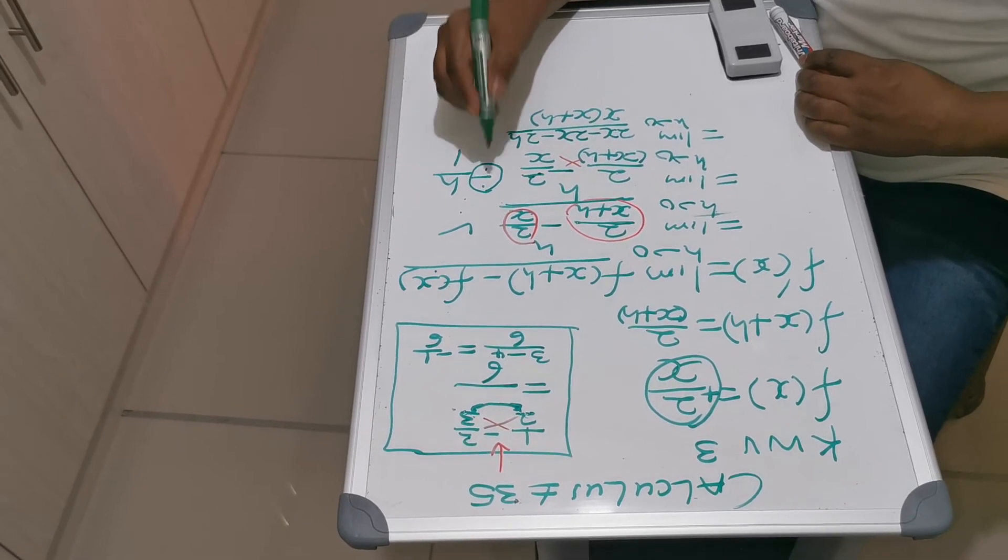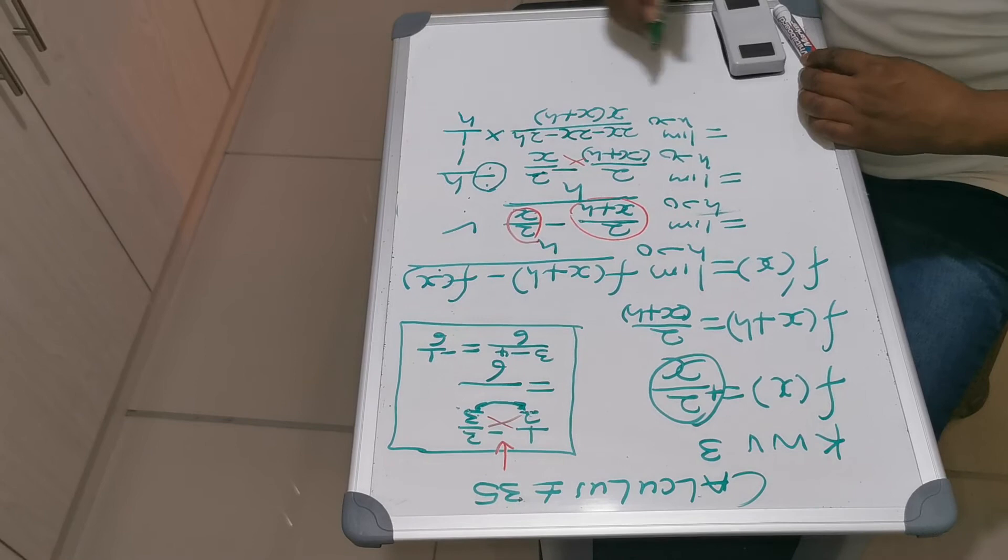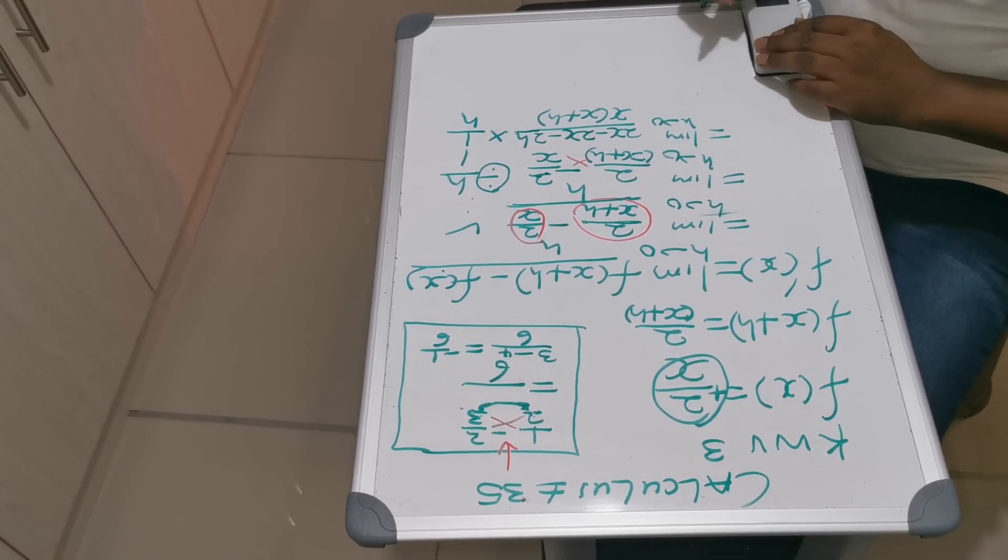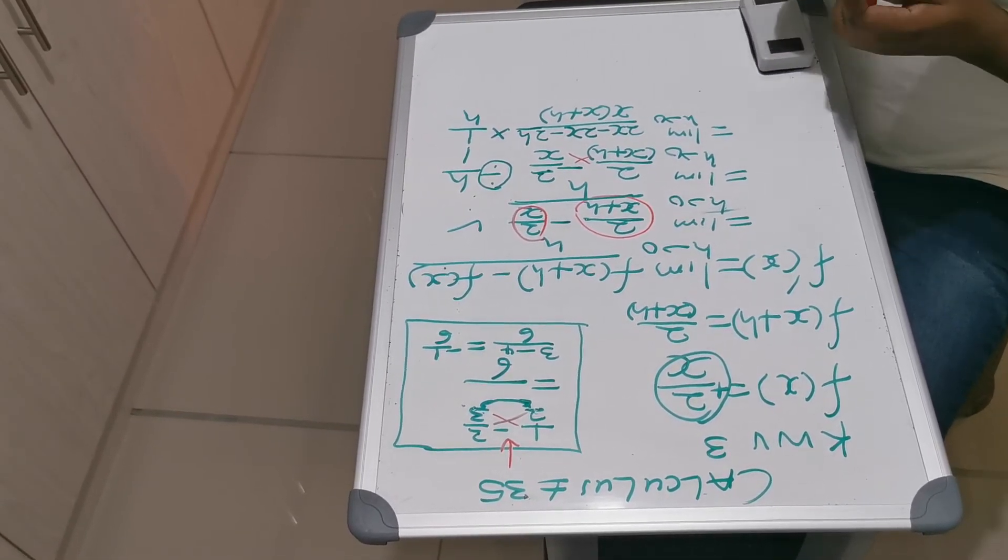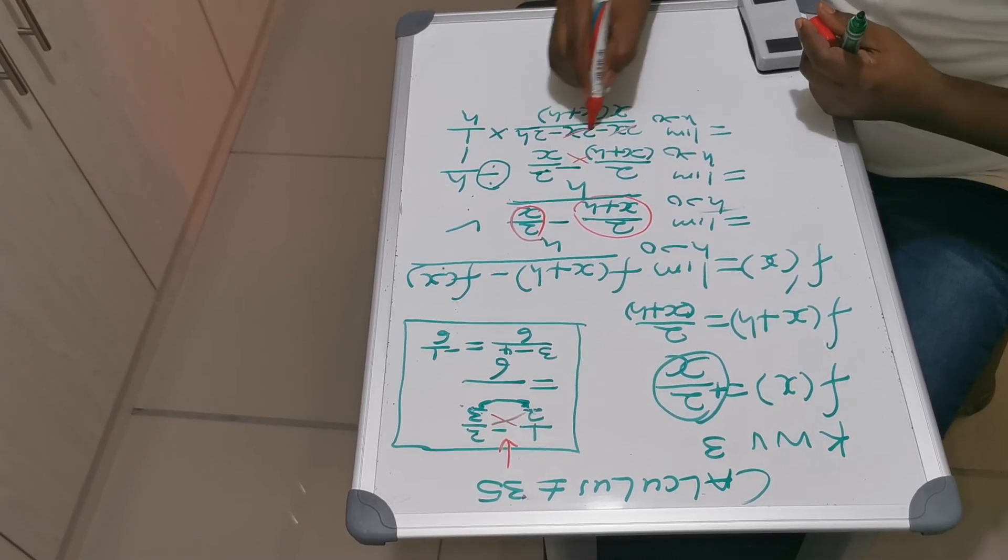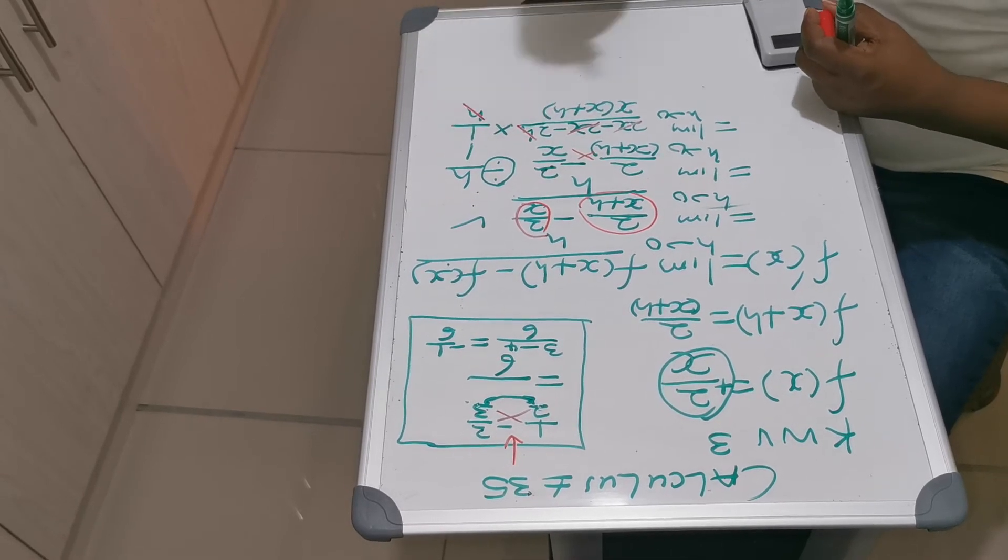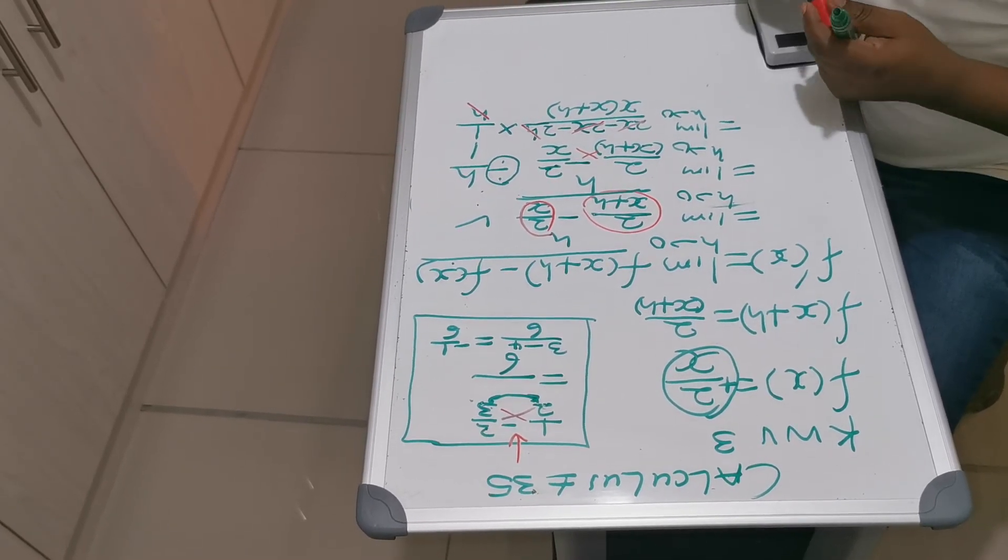If you have a division sign, you change this one to the multiplication sign. Now we look at the like terms. Obviously, 2X minus 2X gives zero. And H and H will divide each other.